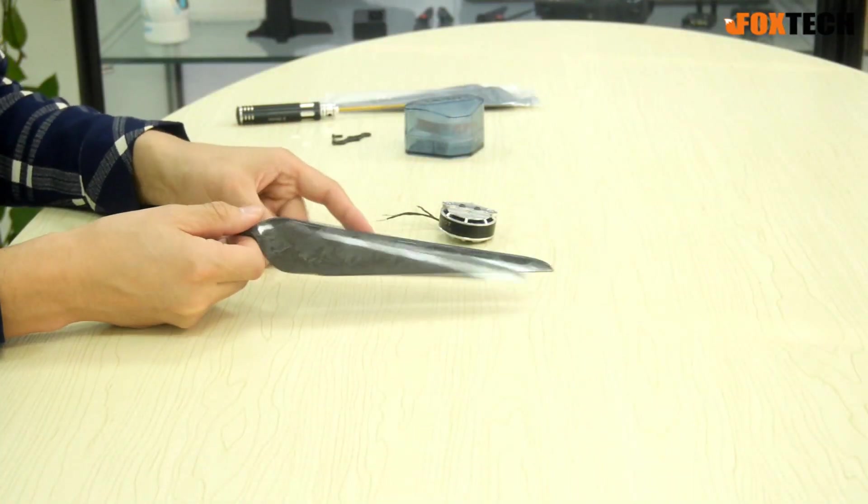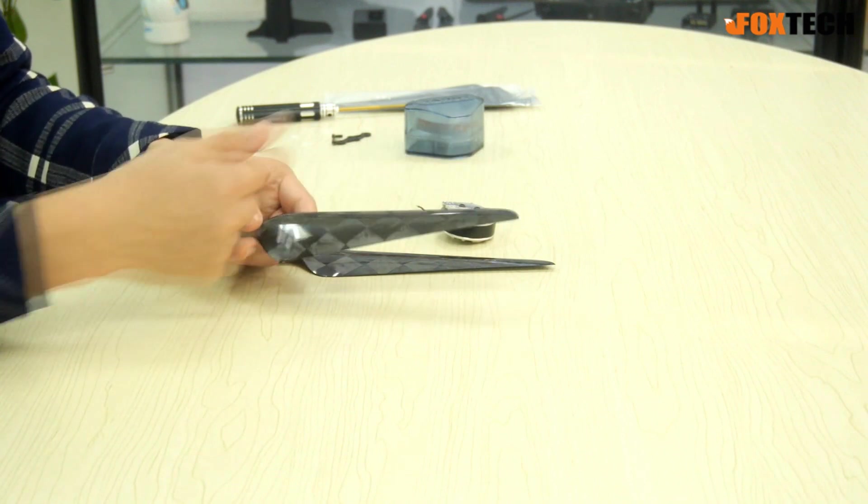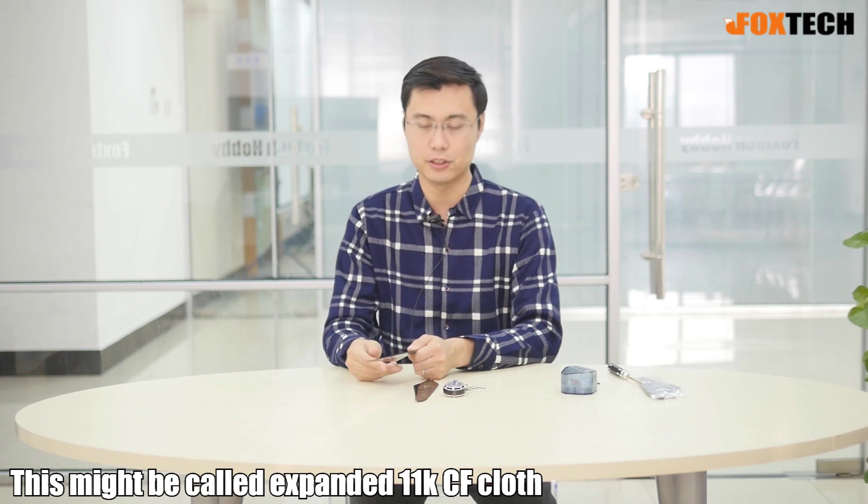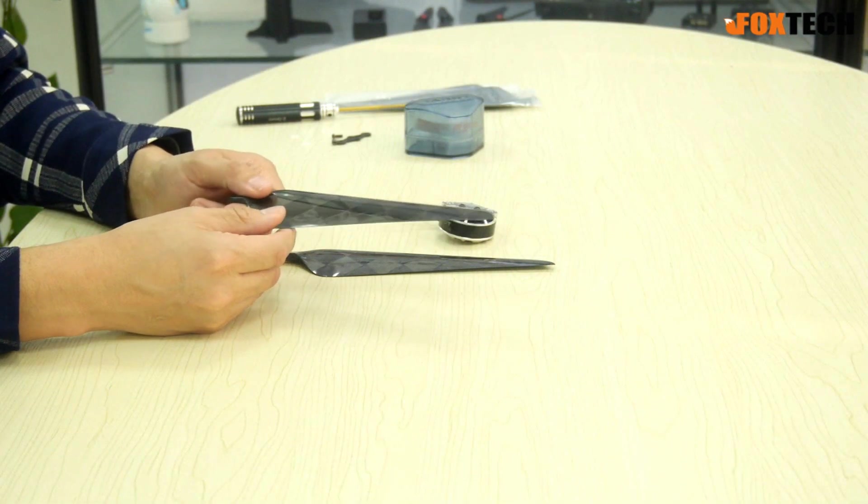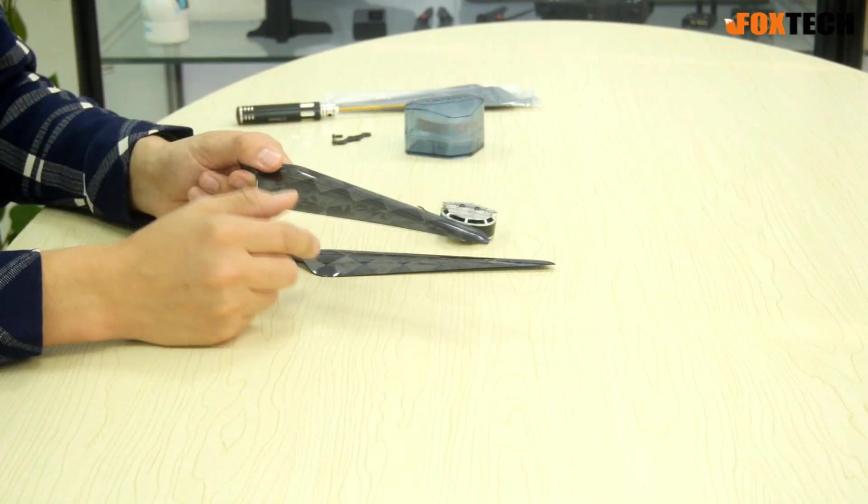Now let's talk about something really special, the Martin type 17 inch folding propeller. This could be the first time I see such kind of material used on a propeller. This material, if I'm right, is called 11k carbon fiber cloth expanded. It's expanded high density carbon fiber cloth. This material has very lightweight and also very high strength.